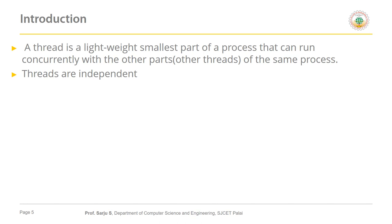That is the power of threads — we can execute things in parallel. Another important aspect of a thread is that it is independent. If there is any exception in one thread, it will not affect other threads. Threads are independent.